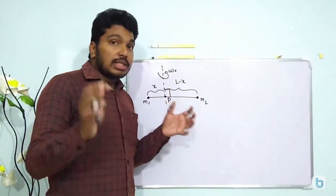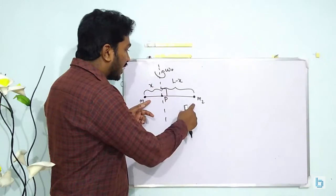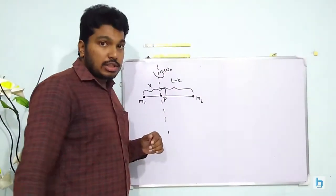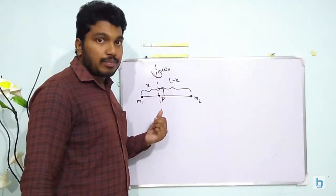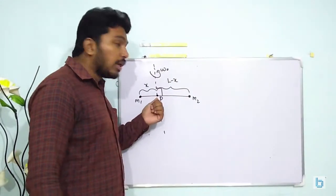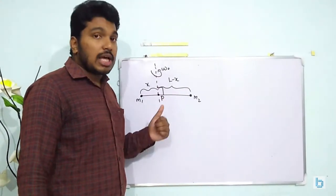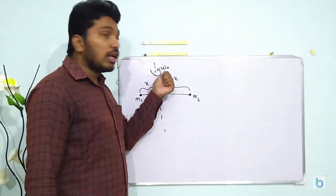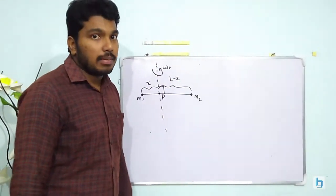Now it is mentioned in the question that we have a rigid rod of length L and masses M₁ and M₂ are attached at the two ends of the rod. What we have to determine is the position of the point P such that the work needed to rotate this rod with an angular velocity ω₀ is minimum.